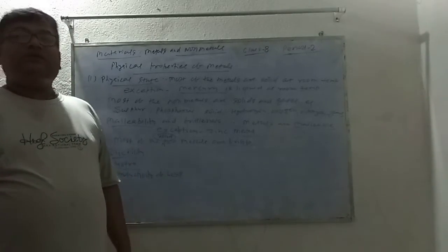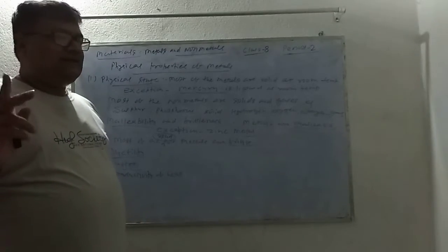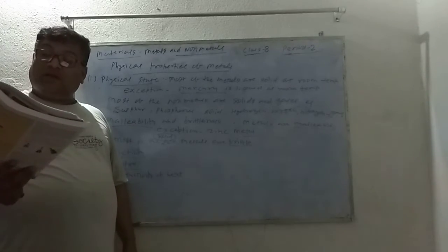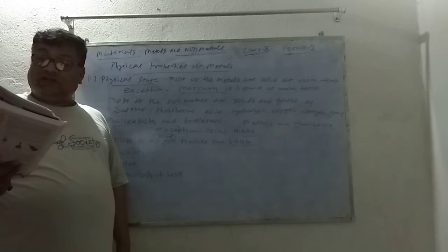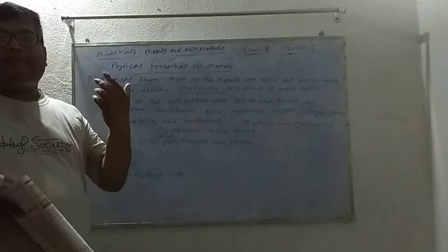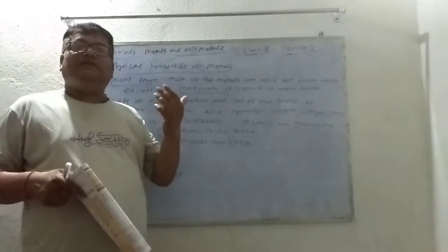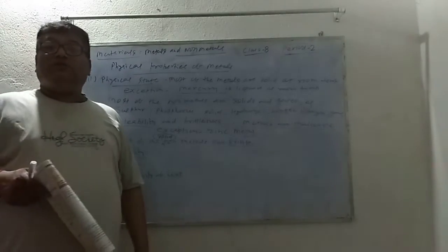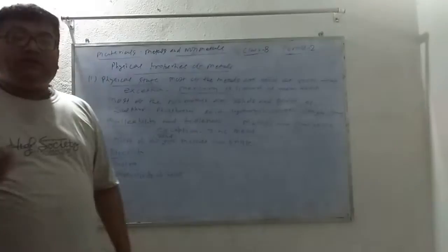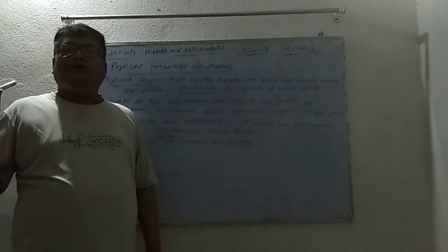Most of the metals are good conductors of electricity, while non-metals are bad conductors. In non-metals, graphite is an exception — it is a good conductor of electricity. Silver is the best conductor of electricity. However, silver is very expensive so it is not used as much. Aluminum and copper are more commonly used for electrical applications.